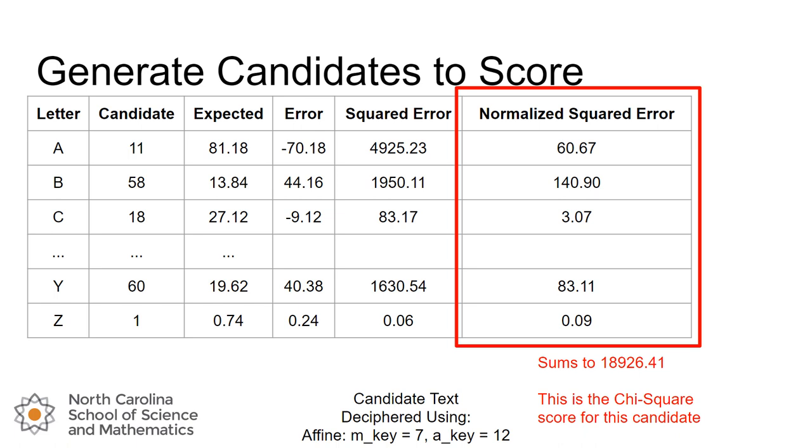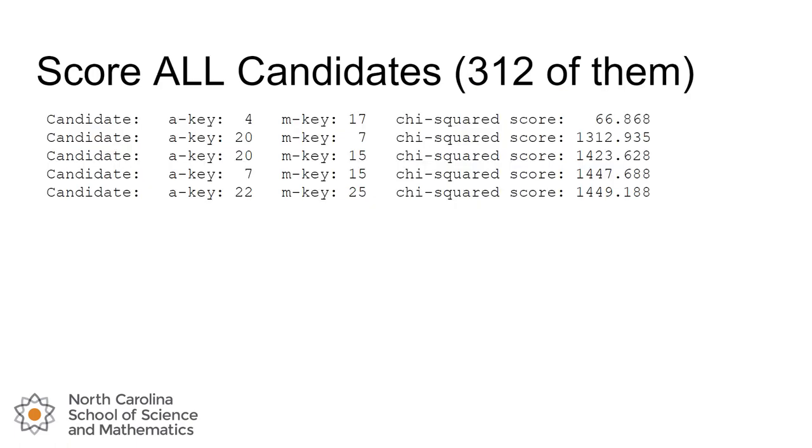So we could do this for all 312 possible key pairings with the affine cipher. This is reminiscent of brute force. We're going to try all of the keys. The only difference here is we're not going to be wading through candidate text and trying to find some English in it. We're not going to be comparing a bar chart of the candidate compared to the standard distribution of English. What we're going to be looking at is just the chi-squared score, which is much more numerical, which means that we can sort it. So here's what we did. I got our top five candidates here based off of their chi-squared score. We did it for all 312. I'm just showing the best five. And by best, I mean the smallest chi-squared score. So we can see that the top-line candidate there with an additive key of 4 and a multiplicative key of 7, when we deciphered using those keys, the resulting candidate text had a score of 66.868. So that's the sum of the normalized squared errors for each of the 26 letters. It was only 66.